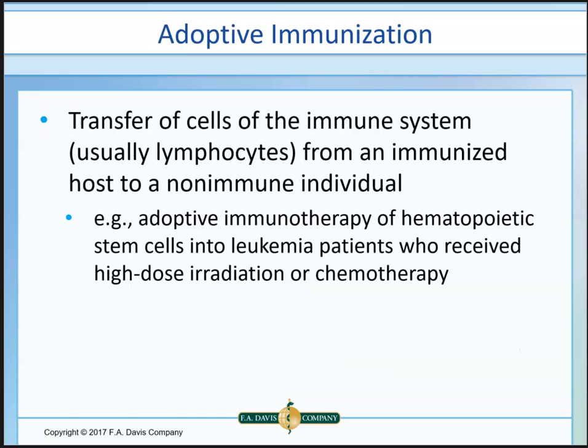Adoptive immunity involves the transfer of actual cells — lymphocytes from an immunized person to a non-immune individual. A common example is stem cell transplants in leukemic patients who have undergone massive radiation or chemotherapy. The stem cells already contain what's needed to protect the leukemic patient.